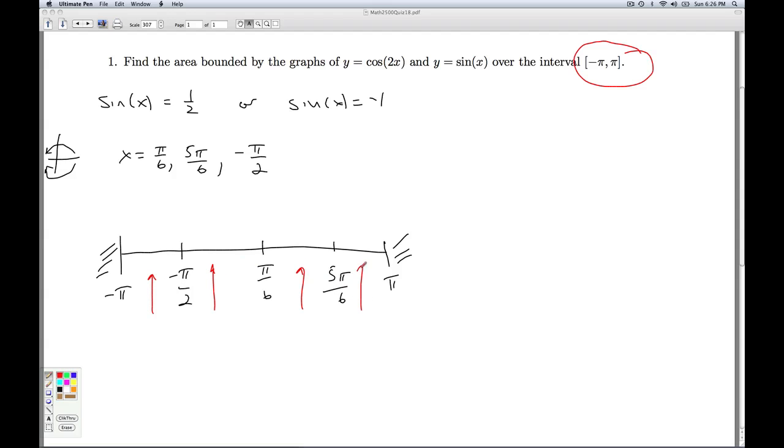This is like finding a sign diagram, but instead of looking for positive or negative, we're looking for who's bigger, cosine 2x or sine x. Why this works is the same reason the sign diagram works. It's the intermediate value theorem and continuity. I need a convenient number between minus pi over 2 and minus pi. Negative 3 pi over 4. A number between minus pi over 2 and pi over 6, 0.